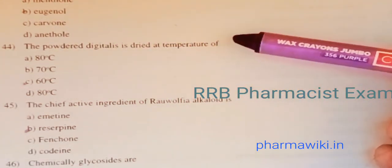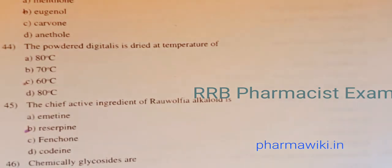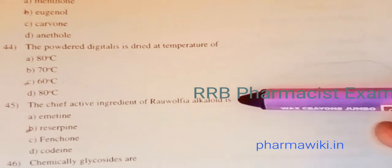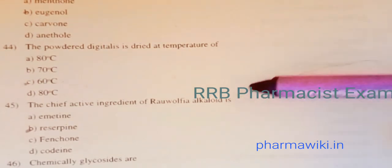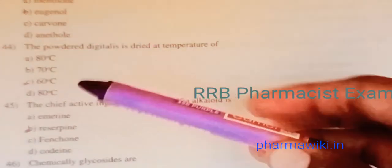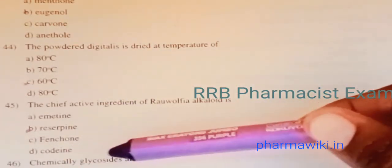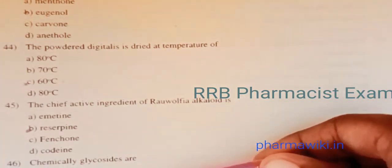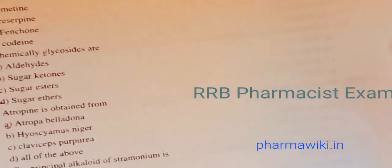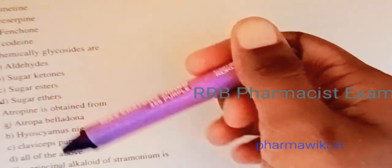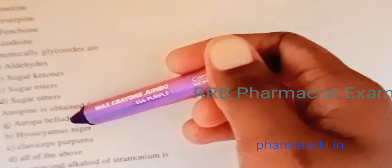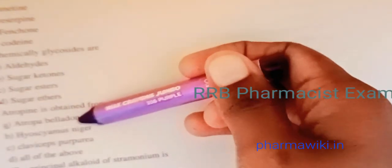Question 43: The active constituent of clove is eugenol. Question 44: Powdered digitalis is dried at a temperature of around 60 degrees. Question 45: The chief active alkaloid of Rauwolfia is reserpine. Question 46: Chemically, glycosides are sugar ethers. Question 47: Atropine is obtained from Atropa belladonna.